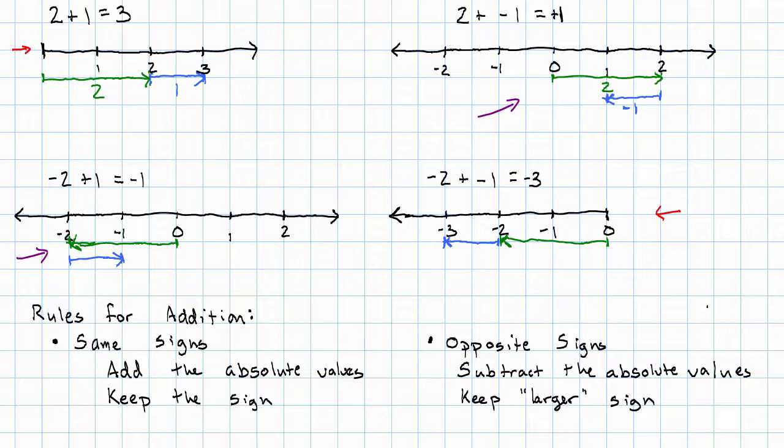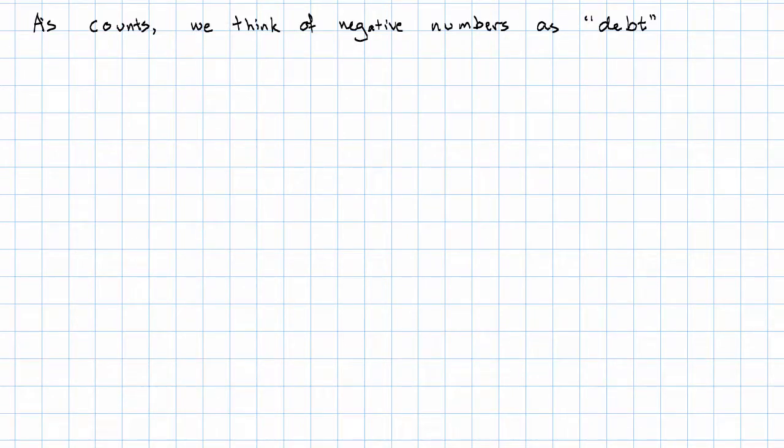How can we understand this in terms of counts? Most of our understandings of negative numbers, most of the direction sorts of things, those actually lend themselves better to these pictures. The understanding of negative numbers that lends itself best to counts is thinking of negative numbers as debt. I like to think of this as the red chip, blue chip model.